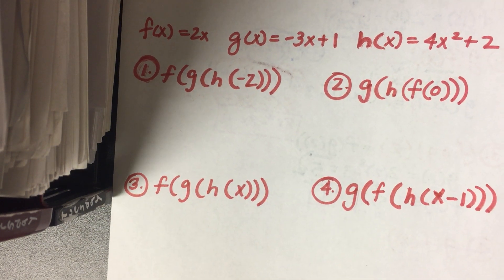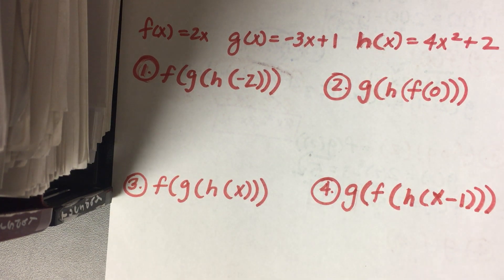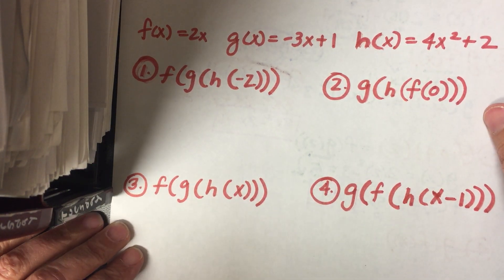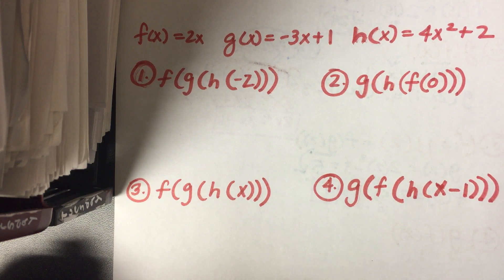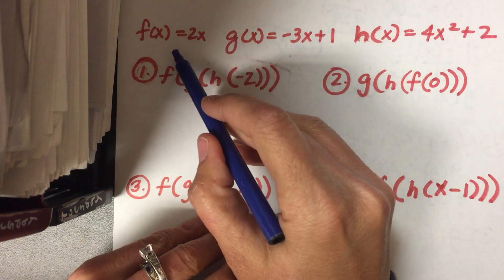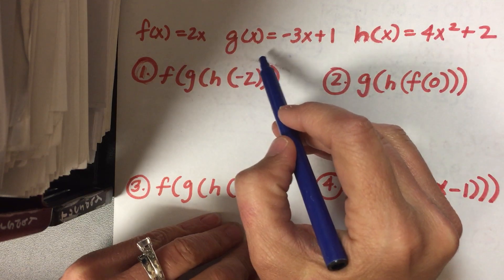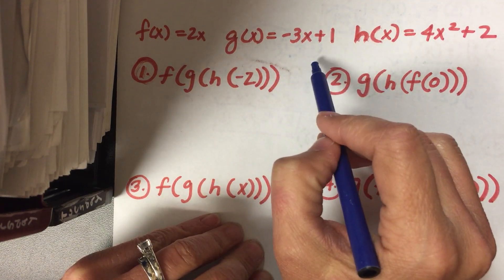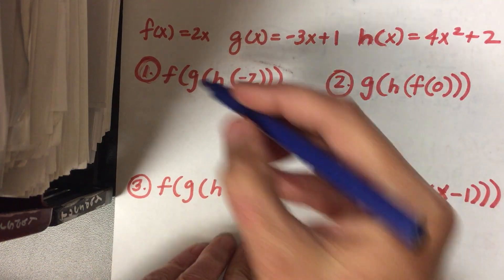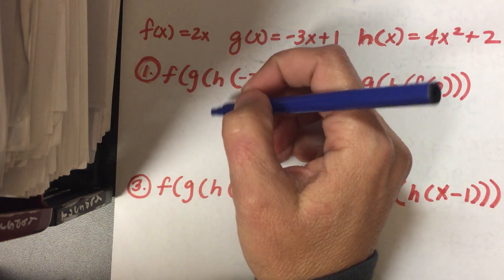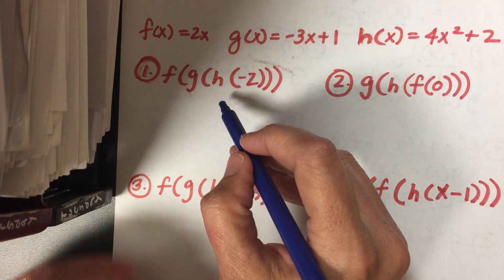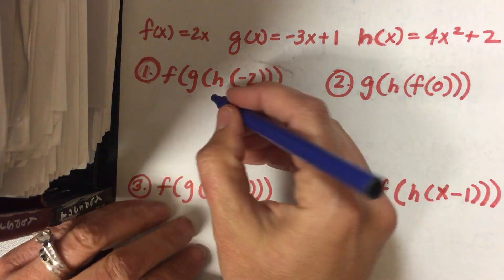This is the second part of composing functions — compositions of functions. In this video, we're actually going to be looking at compositions of more than two functions. You have your functions listed up here: f of x equals 2x, g of x equals negative 3x plus 1, and h of x equals 4x squared plus 2. For number one, we're going to compose, and you're going to work inside out.